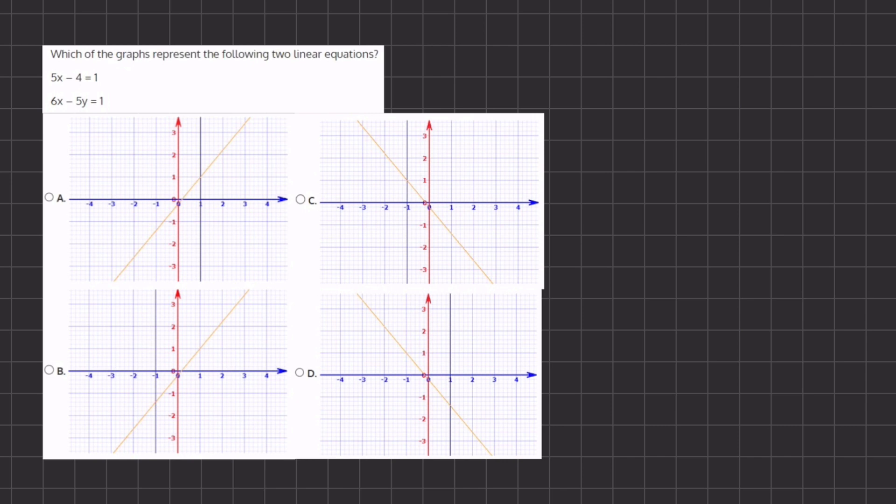If we take a look at our first equation here, 5x minus 4 equals 1, we want to place it into point slope form. But in this case, we do not have a y, and therefore we only want to find the value of x.